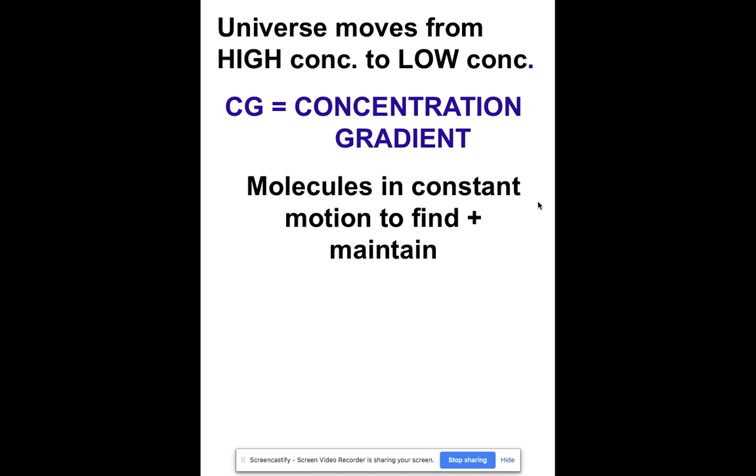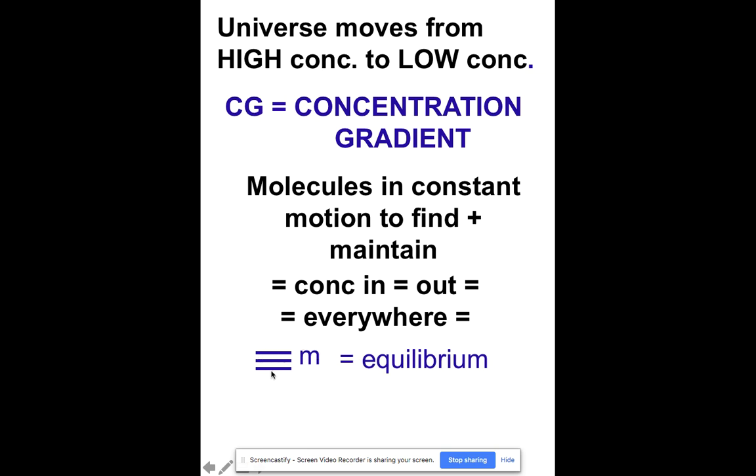And the molecules are in constant motion, and the purpose is because they want to find and maintain an equal concentration inside of a space as they do outside of a space. And the space generally is defined by some sort of barrier. However, it can be just a general space like a room. So, if you spray the perfume in the corner of the room, then eventually all the molecules are going to spread out everywhere, and they're going to be equally distributed. We call this distribution equilibrium, and we use this symbol, the three lines in an M, to represent equilibrium.